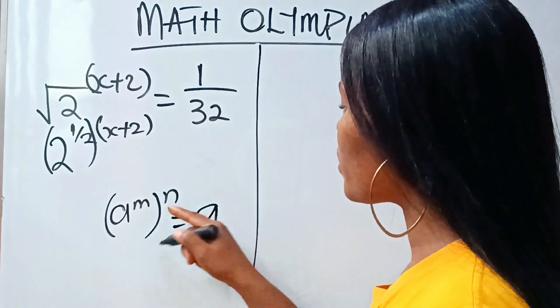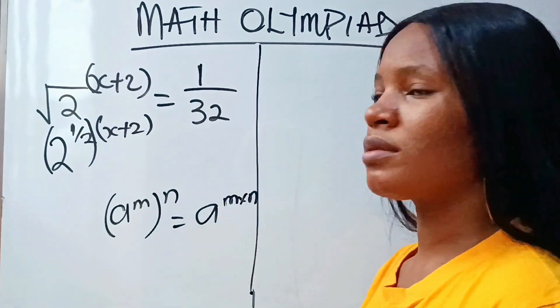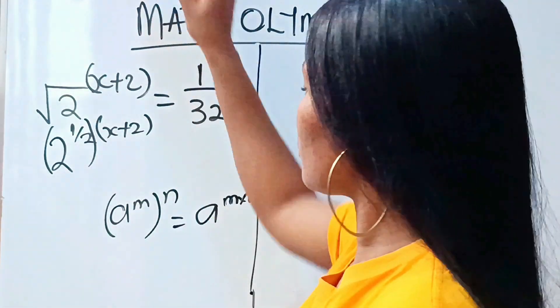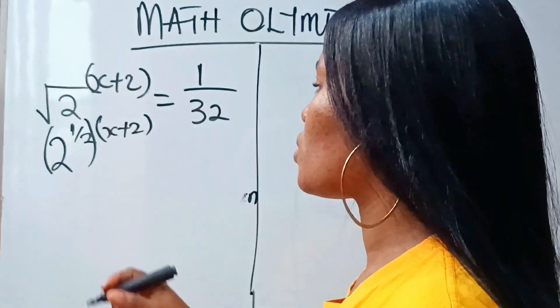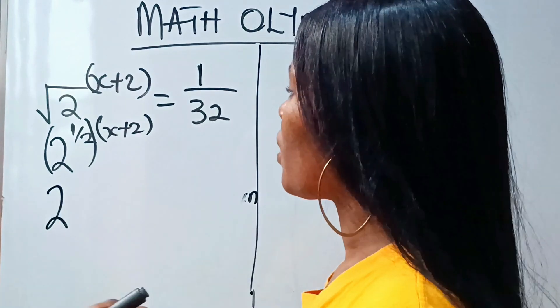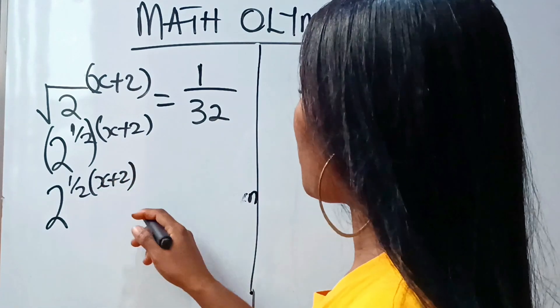So we are going to write m times n. So that simply means that we can rewrite this as 2 to the power of half times x plus 2.